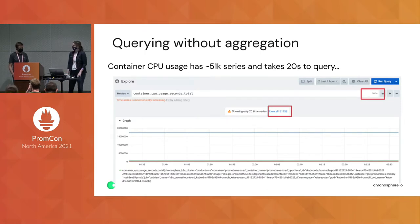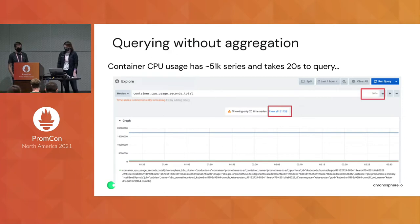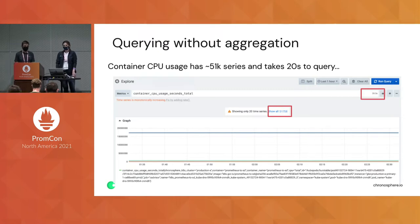Looking at a particular panel here — CPU usage across all of your pods — we can see that this query is pulling all the labels across all of your pods, which results in about 51,000 time series metrics. With that sort of load, it's going to take about 20 seconds for your query results to render.